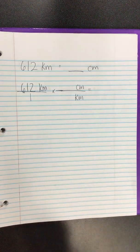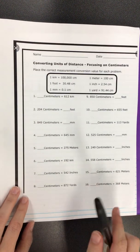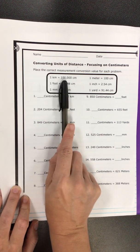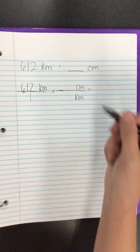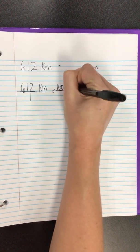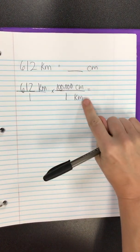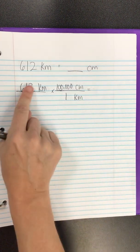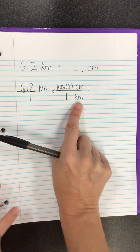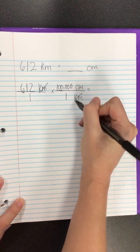We find our conversion factor. In this case, kilometers and centimeters is right here, this first one. 1 kilometer, 100,000 centimeters. 1 kilometer equals 100,000 centimeters. Remember, we put kilometers on the bottom because kilometers were in the numerator over here, so we put them in the denominator in this second fraction so that they cancel each other out.